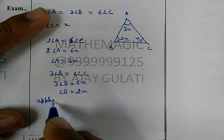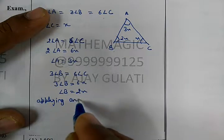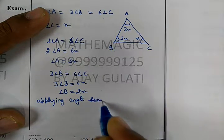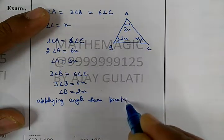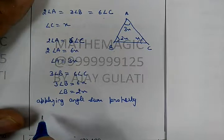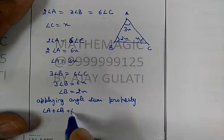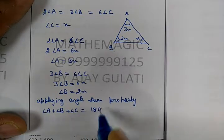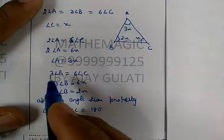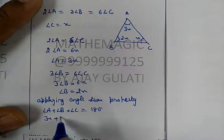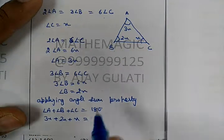Applying angle sum property. What is angle sum property? Three angles sum. I think it's not... it's 180 degrees. 3X, B had 3X, C X.